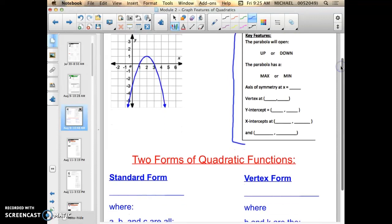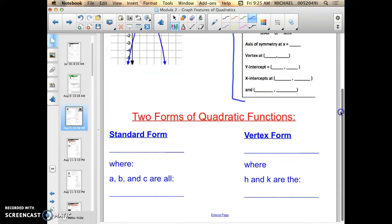As you venture into this objective, you're going to be working through two sub-objectives. It's going to be standard form and vertex form. If you're given a quadratic function, they can either come in standard form or vertex form.